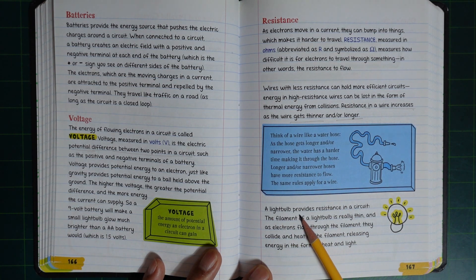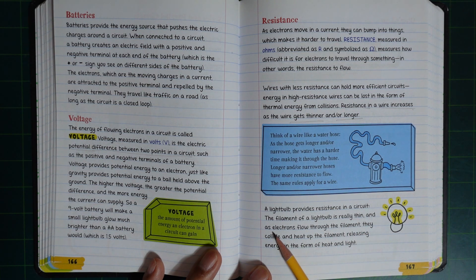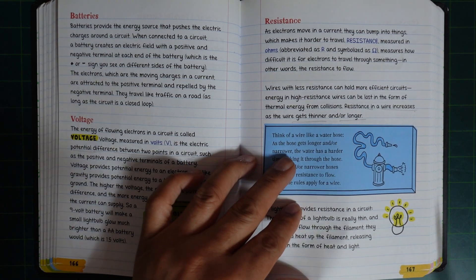A light bulb provides resistance in a circuit. The filament of a light bulb is really thin, and as electrons flow through the filament, they collide and heat up the filament, releasing energy in the form of heat and light.